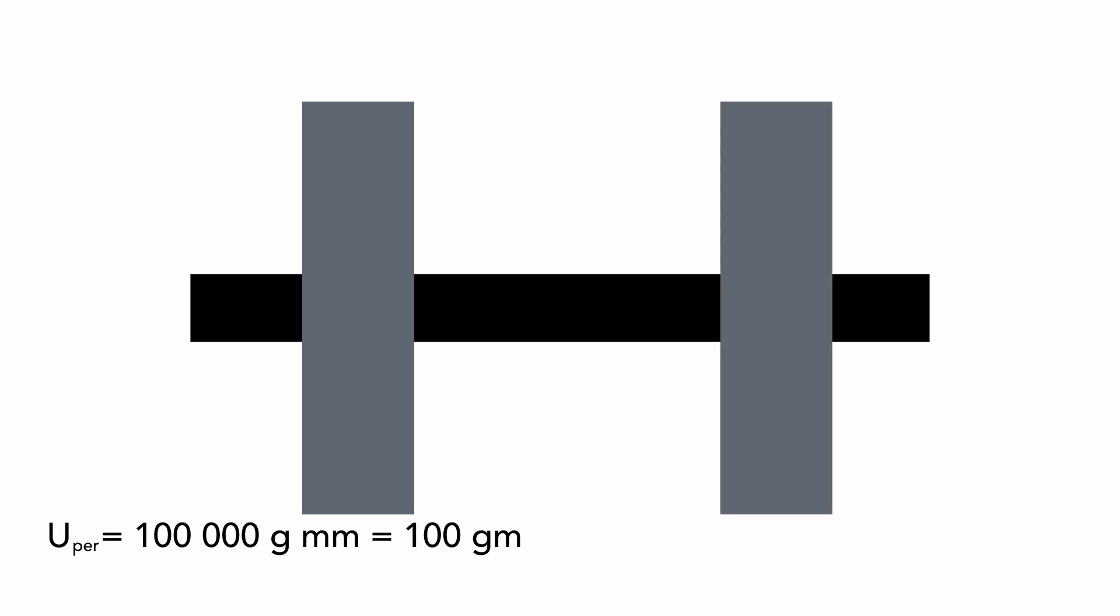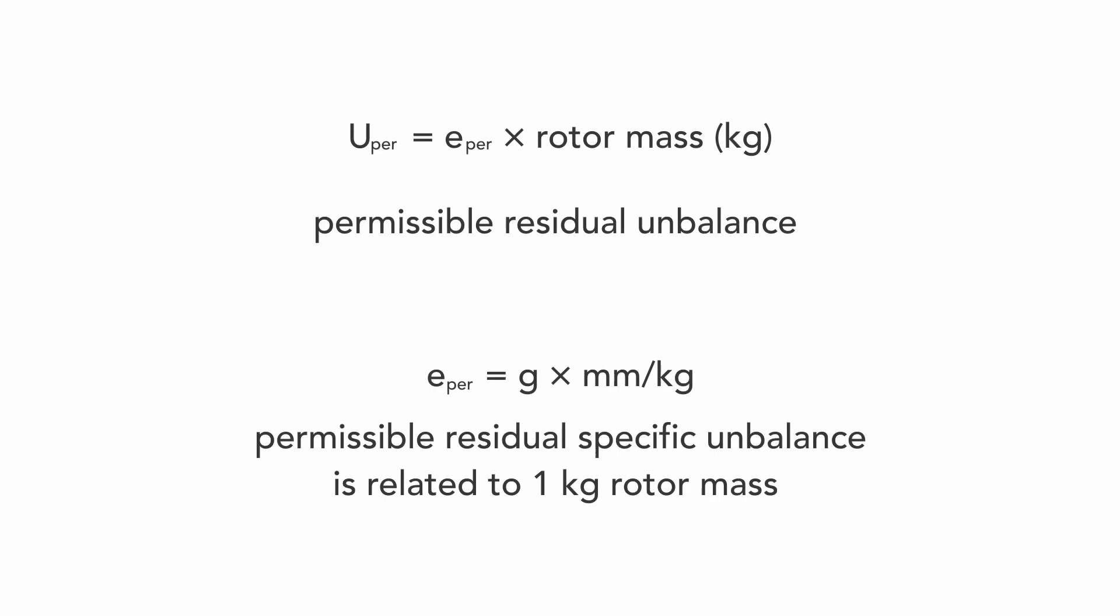Now about the relation of permissible residual imbalance and the rotor mass. Look at the rotor on the picture. For example, the permissible residual imbalance is one hundred thousand gram millimeters. I can recalculate it to one hundred gram meters. Now I add the same next rotor to this one. This new one has the same individual permissible residual unbalance. It is clear that two times heavier rotor has two times higher permissible residual unbalance. In general, for rotors of the same type, the permissible residual unbalance U-per is equal E-per times rotor mass in kilograms.